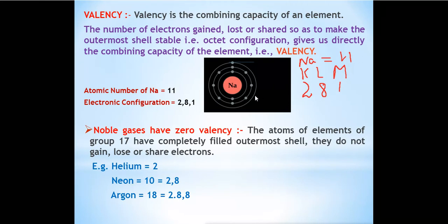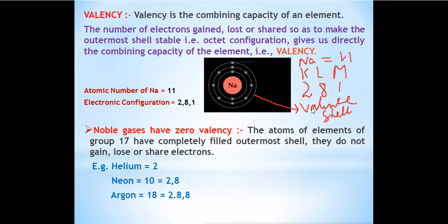One important point: the last or outermost shell is called the valence shell. The electrons present in the valence shell or the outermost shell are called valence electrons. This is a very important concept. The outermost shell of an atom is called the valence shell, and the electrons in the outermost shell are called valence electrons. These valence electrons take part in chemical reactions and determine the valency.